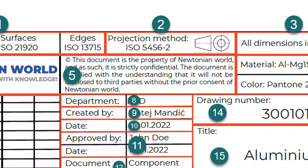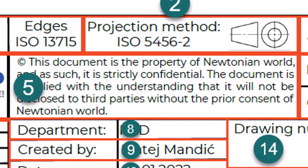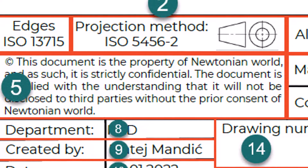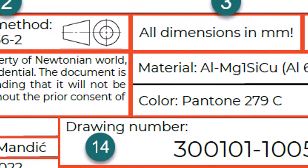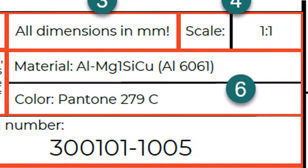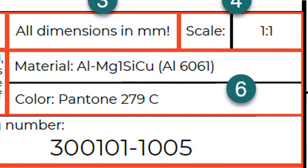Legal Owner. In this field, usually the company name is displayed — it could be the company's name, initials, or logo. A remark is added with the company name to protect the drawing from freely being shared with the competition — for example: 'This document is the property of the Newtonian World and as such is strictly confidential. The document is supplied with the understanding that it will not be disclosed to third parties without the prior consent of Newtonian World.' Material. In order to manufacture a part, we need a raw material shaped into the desired form. In the title block we can define which material type, color, or finishing we want to attribute to this part.